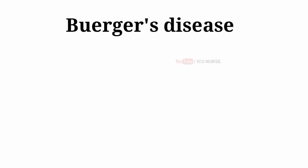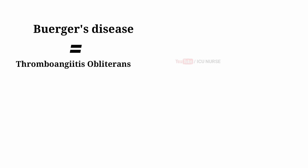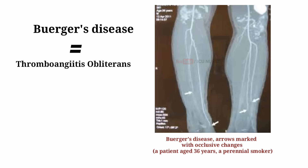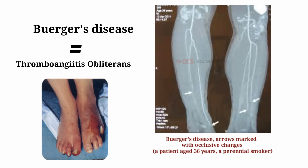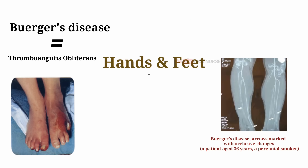Buerger's disease, also called thromboangitis obliterans, causes blood vessels to swell and become blocked with blood clots — thrombi. This eventually damages or destroys skin tissues and may lead to infection and gangrene. Buerger's disease usually first shows in the hands and feet and may expand to affect larger areas of the arms and legs.